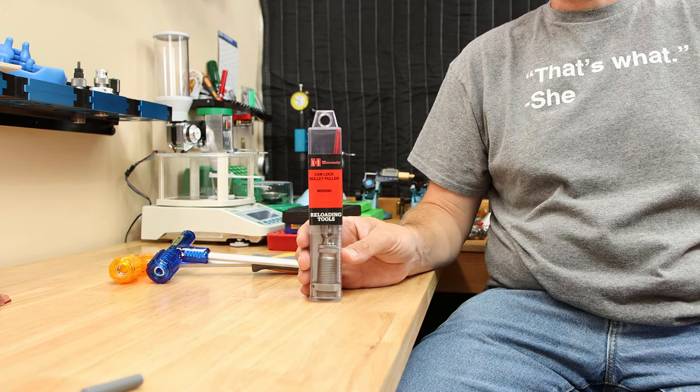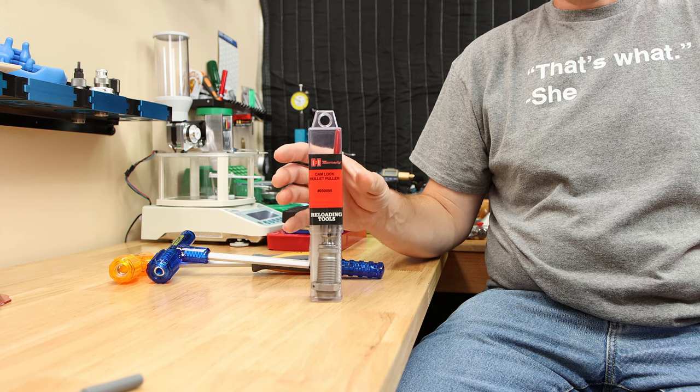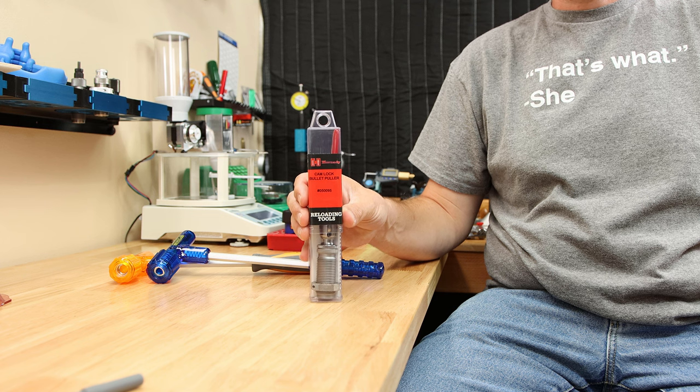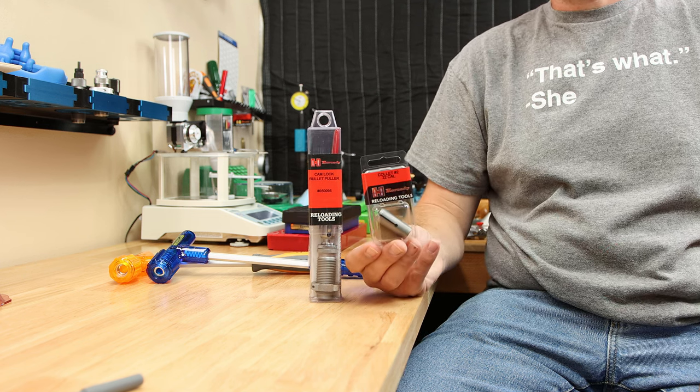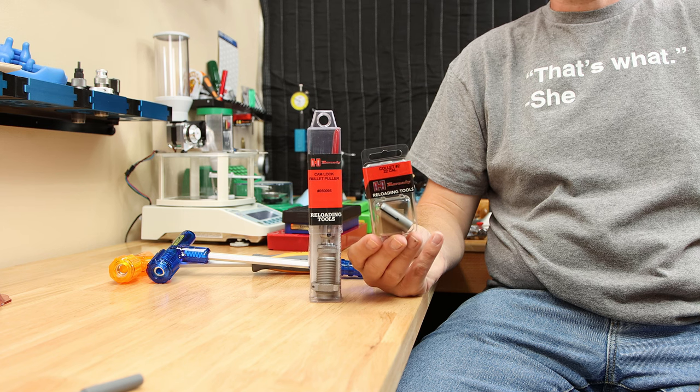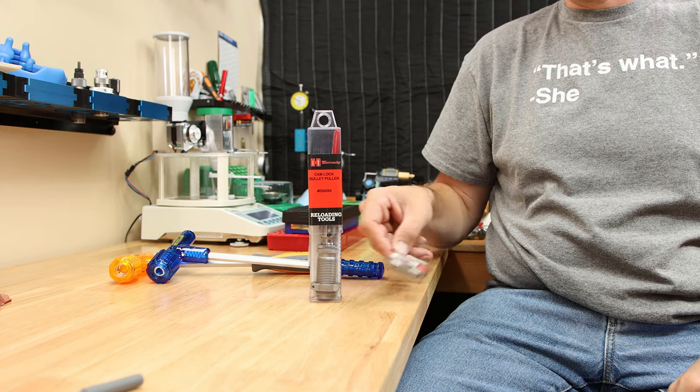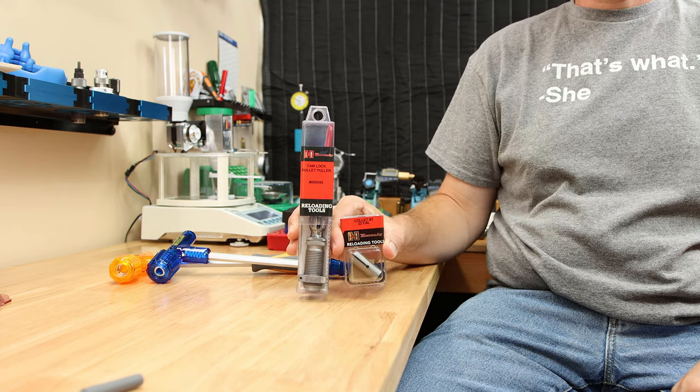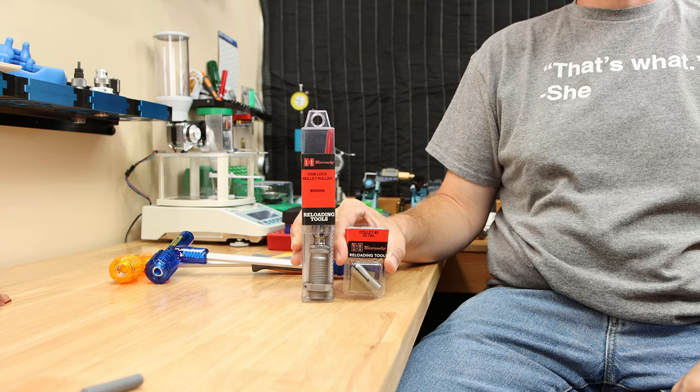If you end up needing to do larger quantities, the Hornady cam-lock puller works pretty well, but the puller itself is in the ballpark of $33. But it needs a collet for every single caliber you intend to load. Individual collets run somewhere in the ballpark of $12.50, give or take. So if you don't have very many mistakes to disassemble, these kinetic ones will work just fine. But if you're going to have to disassemble a lot, the cam-lock puller is a lot more efficient, at least in my experience.